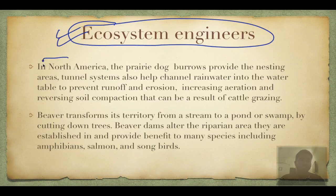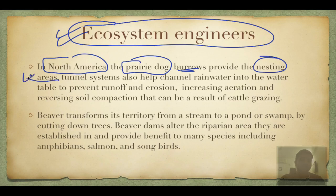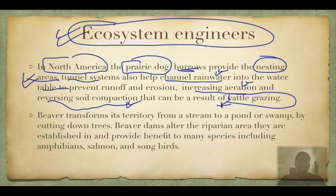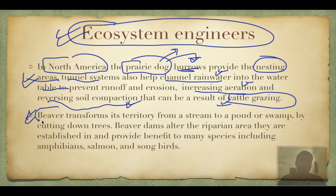Ecosystem engineers — in North America, prairie dogs burrow, providing nesting areas for themselves and other species. Their tunnel systems prevent water storage, channel rainwater into the water table, prevent soil erosion, prevent runoff, increase soil aeration, and decrease grass size so other species can feed on it. They reverse soil compaction and help cattle grazing — a huge ecosystem impact through their engineering.